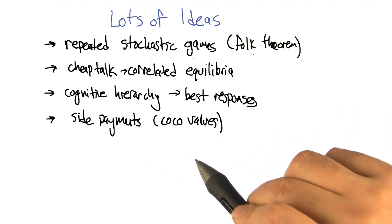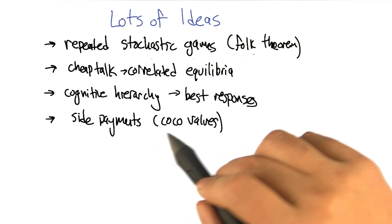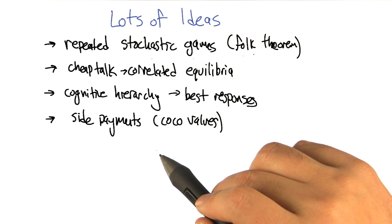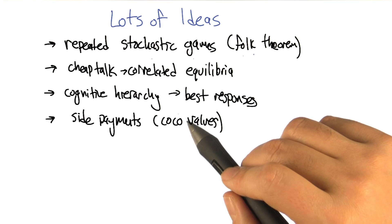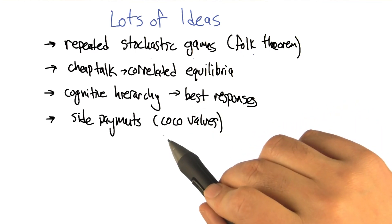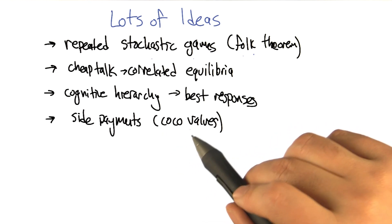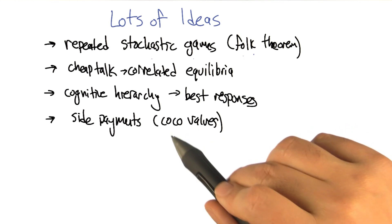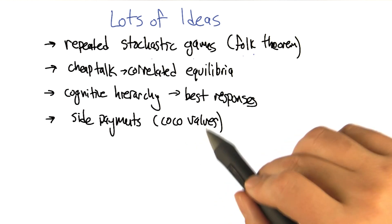And the last idea I want to throw out is the notion of actually using side payments, so that the players, as they're playing together, can not only take joint actions, but they can say, hey, I'm going to get a lot if we take this action, I'm going to get a lot of reward. I'm going to give some of that reward back to you, and that'll maybe encourage you to take the action that I need you to take so that we'll both do better. And so there's this lovely theory by a father and son duo that they call COCO values. COCO sounds awesome, but it stands for cooperative competitive values. And so it actually balances the zero sum aspect of games with the mutual benefit aspect of games. So it's a really elegant idea.